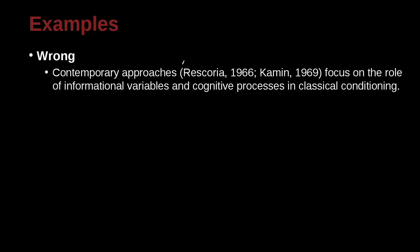Contemporary approaches — Rescorla 1966, Common 1969 — focus on the role of informational variables and cognitive processing in classical conditioning. So what's the problem here? This looks pretty good: we have a name, comma, a year, semicolon — that looks pretty good. But we come into the problem of who goes first and who goes second. Remember that multiple different papers by different authors need to use the alphabetical order of the name. K is before R.